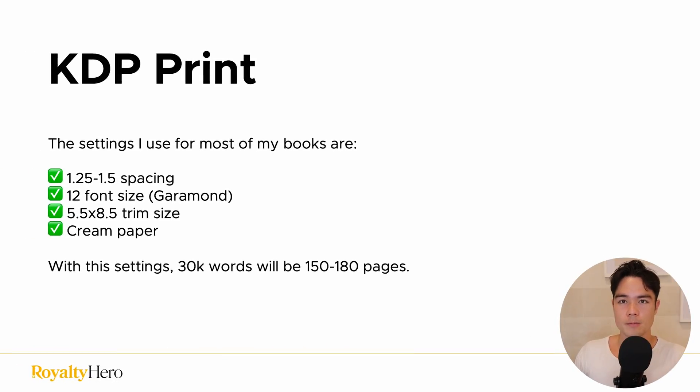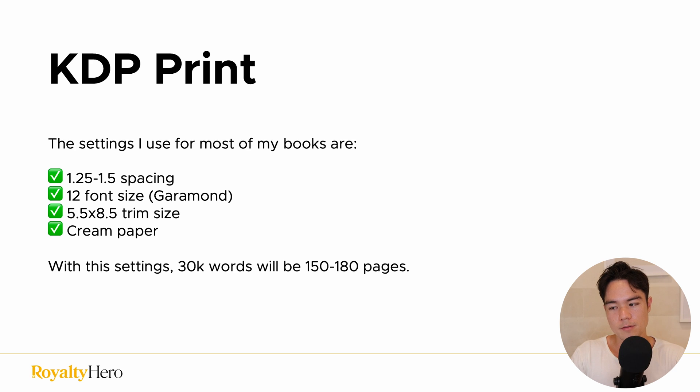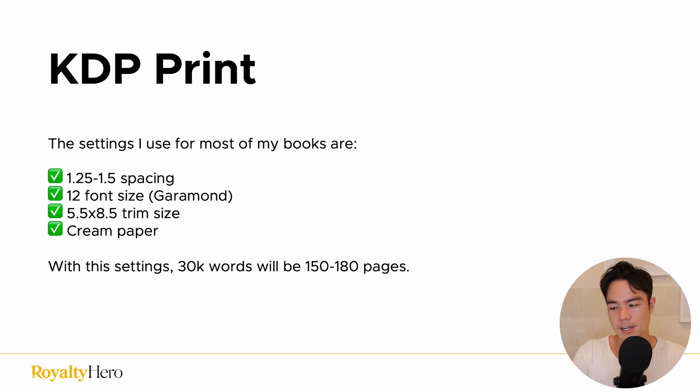Just to recap, there are different trim sizes you can choose from: 5 by 8, 6 by 9 — which is good for journals, nonfiction, and fiction — or 8.5 by 11, which is more for low content books. I usually do 5 by 8, 5.5 by 8.5, or 6 by 9. The settings I use for most of my books are 1.25 to 1.5 spacing, 12 font size with Garamond, a 5.5 by 8.5 trim size, and cream paper. With these settings, 30,000 words will be about 150 to 180 pages, which is kind of the sweet spot.